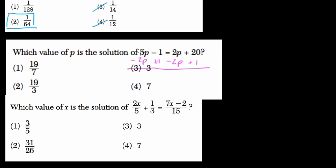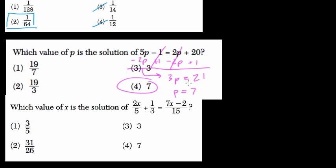And what do I get? 5p minus 2p, that's 3p. Negative 1 plus 1 is 0 — it cancels out. 2p minus 2p is 0. 20 plus 1 is 21. So 3p equals 21. p equals 7. I just divide both sides by 3.